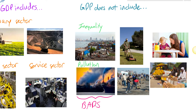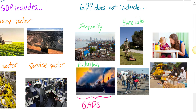Another thing GDP does not include is negative externalities of production — more simply, the pollution that results from the production of goods and services. An increase in GDP does not tell you whether society is more or less equal or whether the environment is more or less polluted than it was before. Now here we've got a man mowing his own lawn — what we could call home labor. He's working on his own yard, and the value of the service he's providing for himself is not included in GDP.